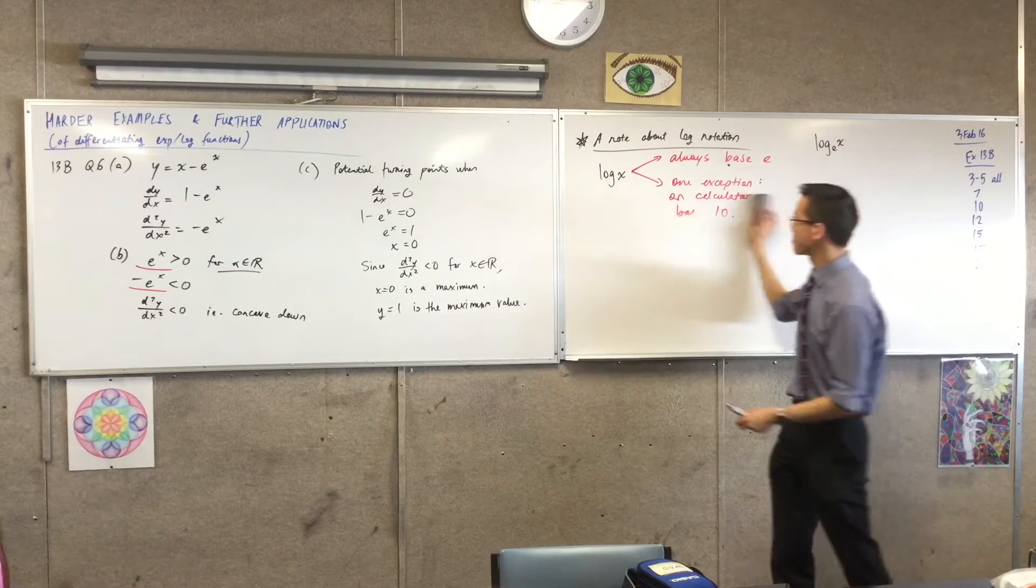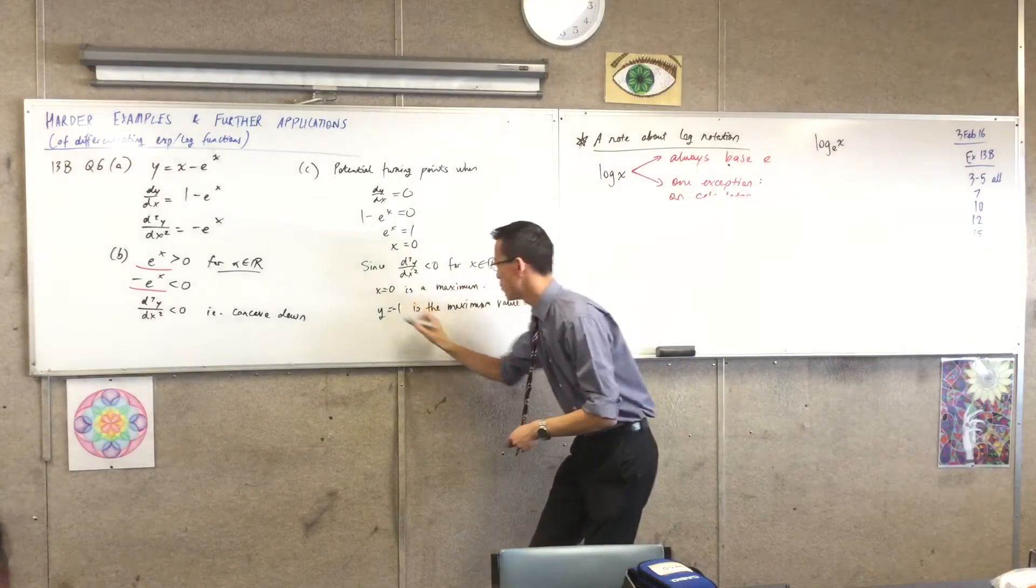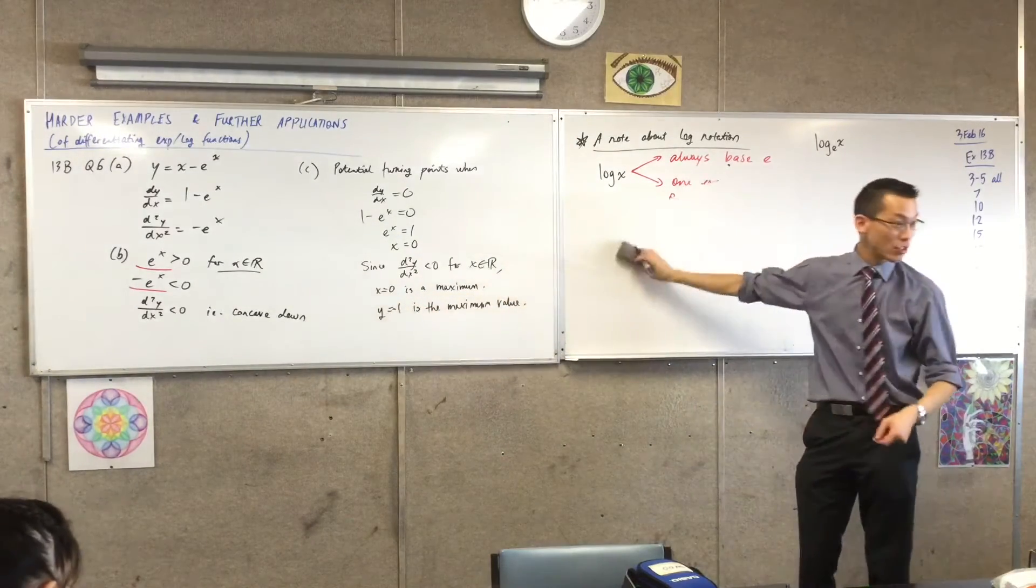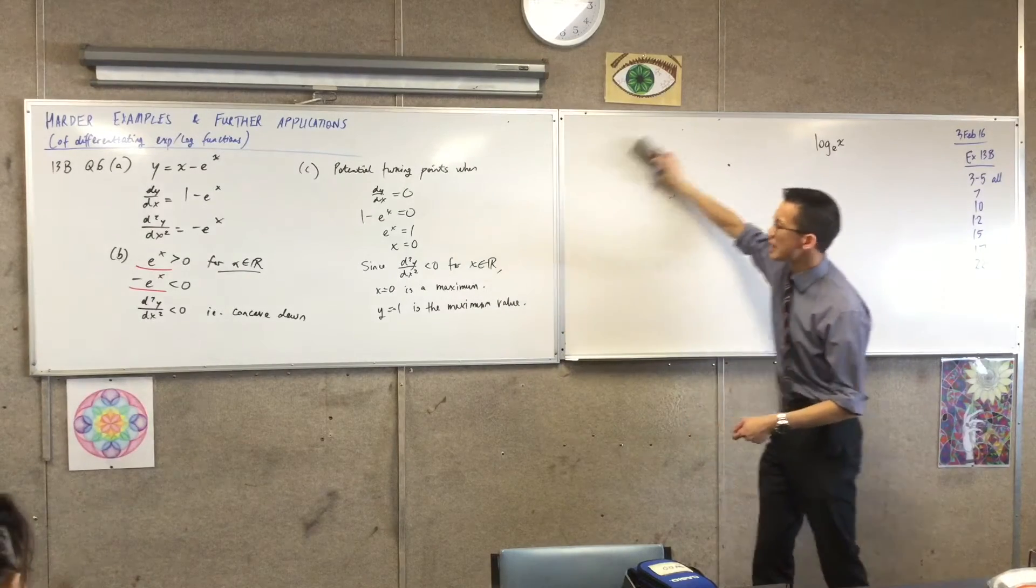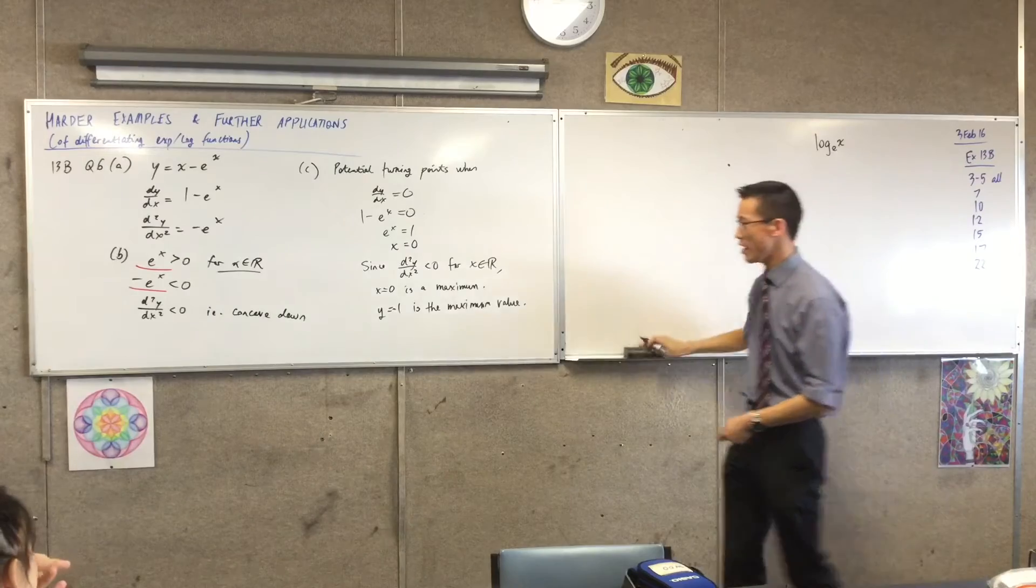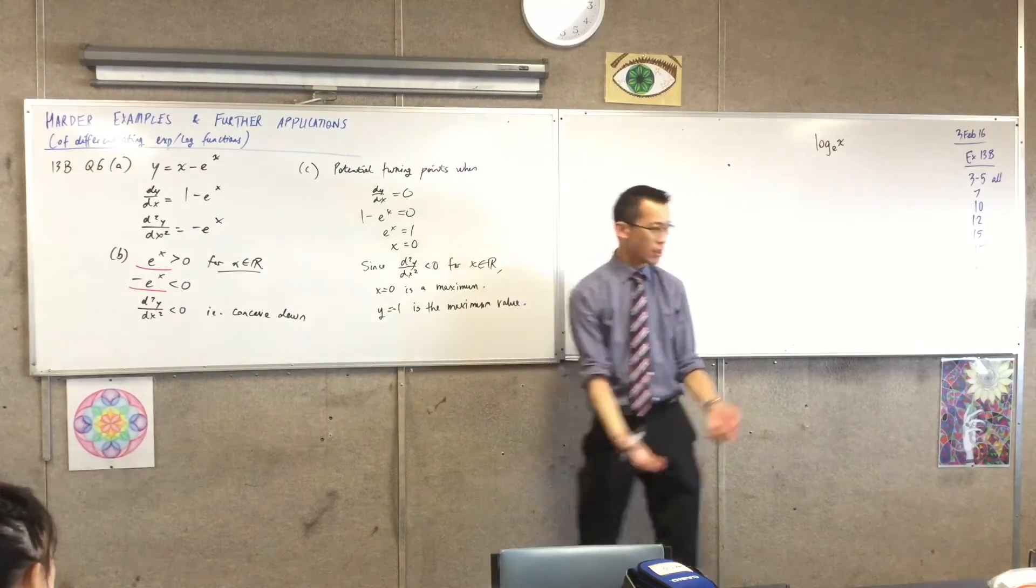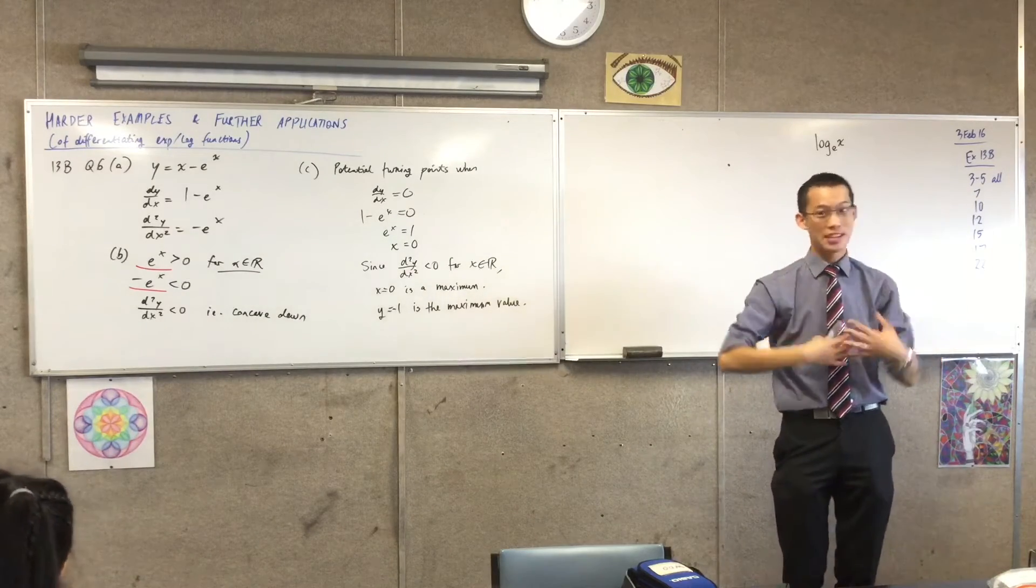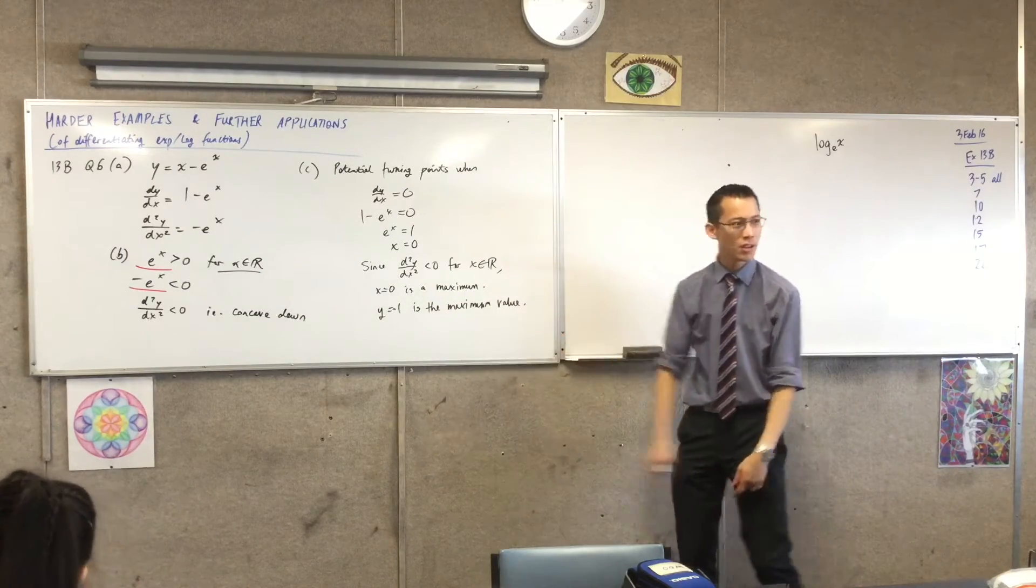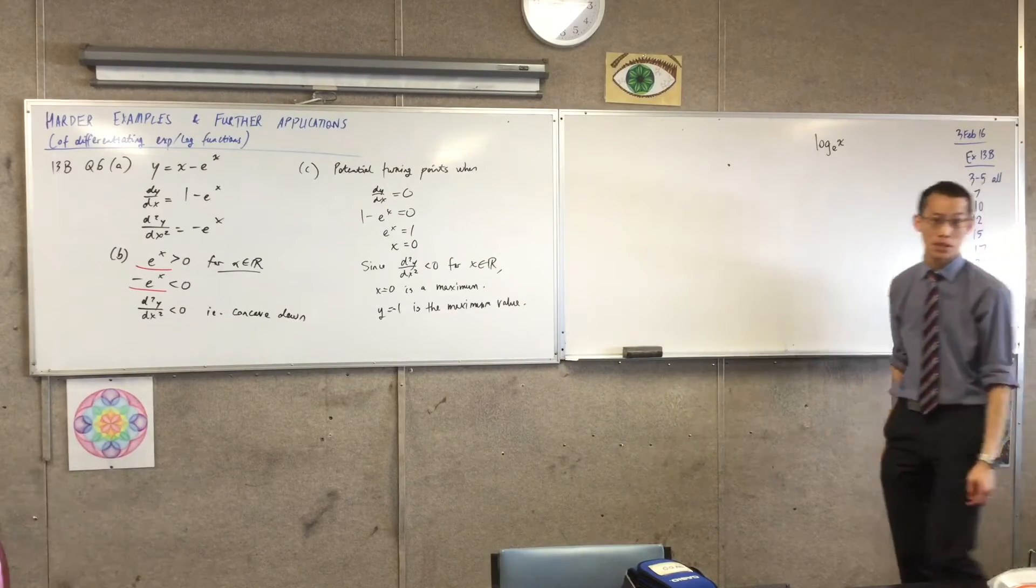Now, the fun part. We get to graph now. Now, you already know a fair bit about this. x minus e to the x. You know it's concave down everywhere. You know the highest value that it takes. Go ahead, draw your set of axes. You're only going to need the negative half of the Cartesian plane, because of what I just established. I'll let you have a second to draw it out. See what you can know before I give you a visual.